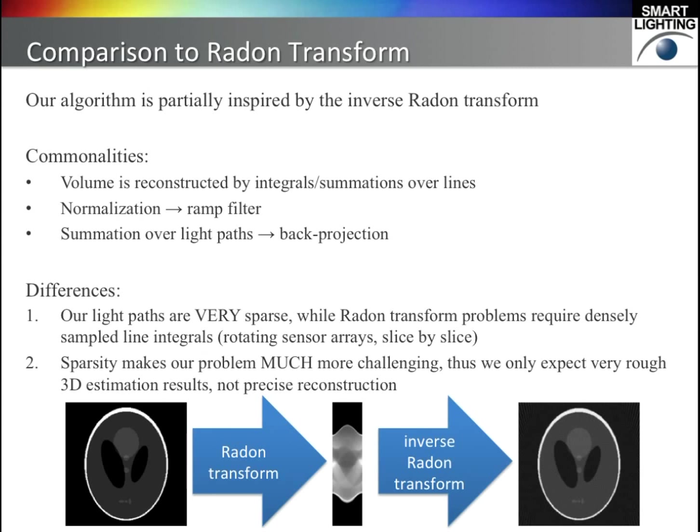Our problem is very different from standard Radon transform problems. In the Radon transform, the lines are densely sampled — for example, the sensor arrays can rotate and scan slice by slice. But our sensors are fixed, and we only have a dozen of them. This makes our problem much more challenging.